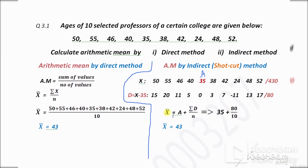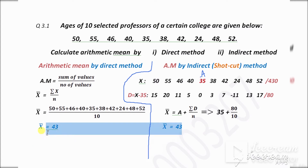Now substitute the values into the formula. A is the assumed value which is 35, summation D is 80, and N is 10. So 80 divided by 10 gives 8, and 8 plus 35 equals 43. So 43 is our arithmetic mean by indirect method. Both direct method and indirect method give the same answer: 43.